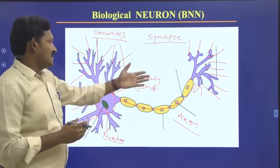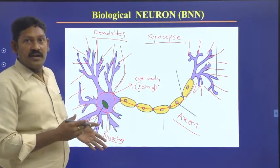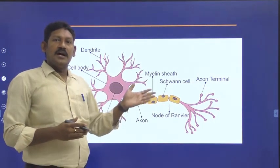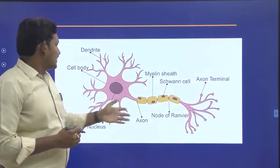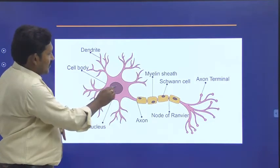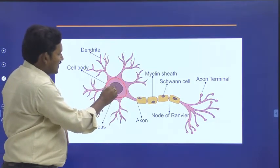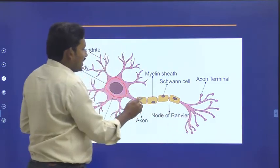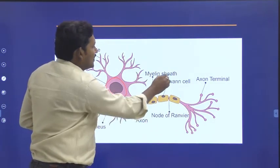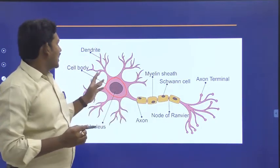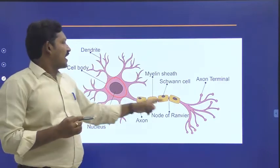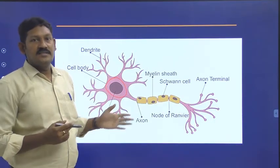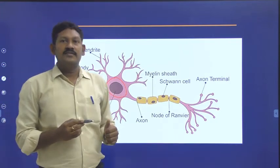I will show you one more figure — this is a simple neuron. Different textbooks show neurons in different figures. All these are dendrites; this is the cell body, and inside the cell body we have the nucleus. This entire thing is the axon, and these are axon terminals. The dendrites will be connected with the axon of another neuron; similarly, these axons will be connected with the dendrite of another neuron. This is what happens inside the biological neuron. With this we will wind up this session.